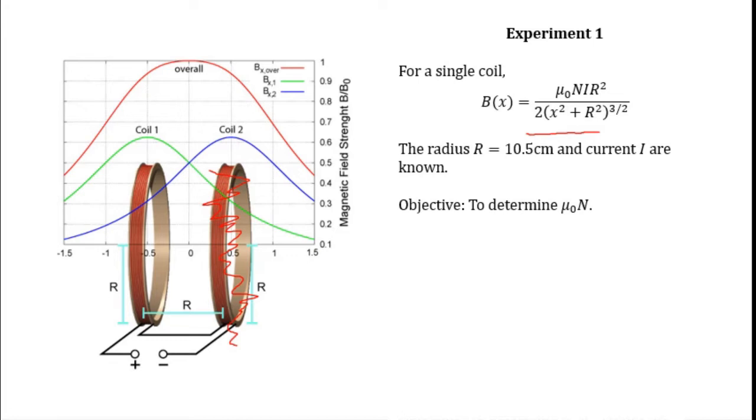The objective of the first experiment is to determine the value of μ₀N, where N is the total number of wire windings in the coil.